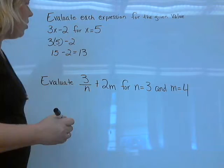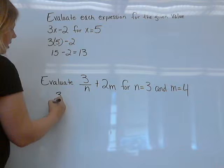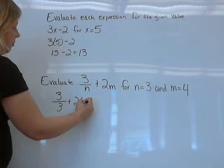In this case, n equals 3 and m equals 4. So I'm just going to substitute those numbers for the variables and rewrite it: 3 divided by 3 plus 2 times 4.